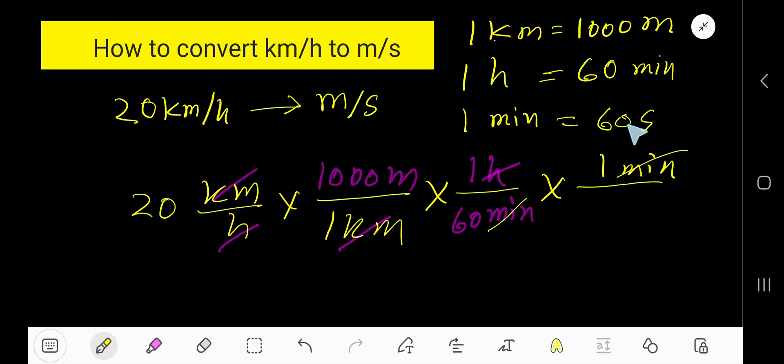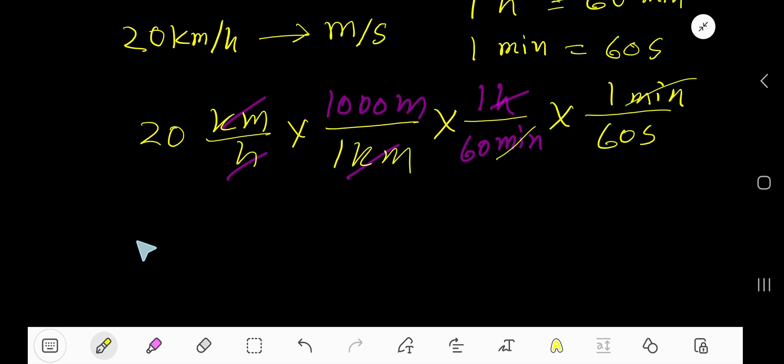So now at the top we have the unit meter, at the bottom we have seconds, so meter per second. Multiply top numbers together: 20 times 1000. And bottom numbers together...